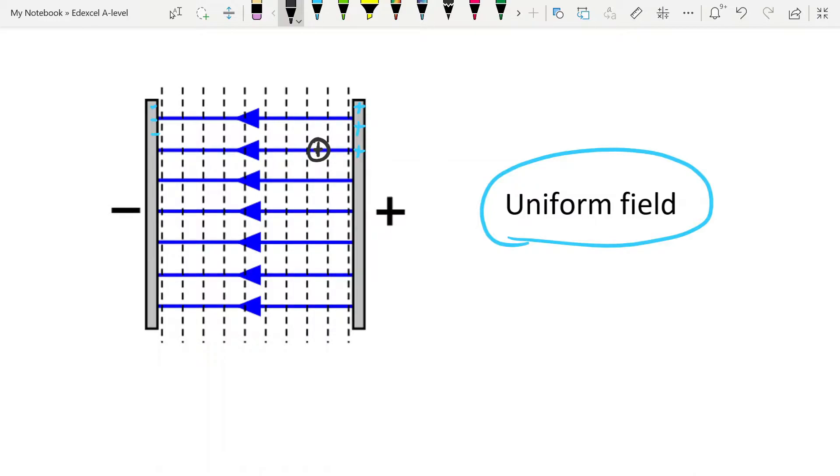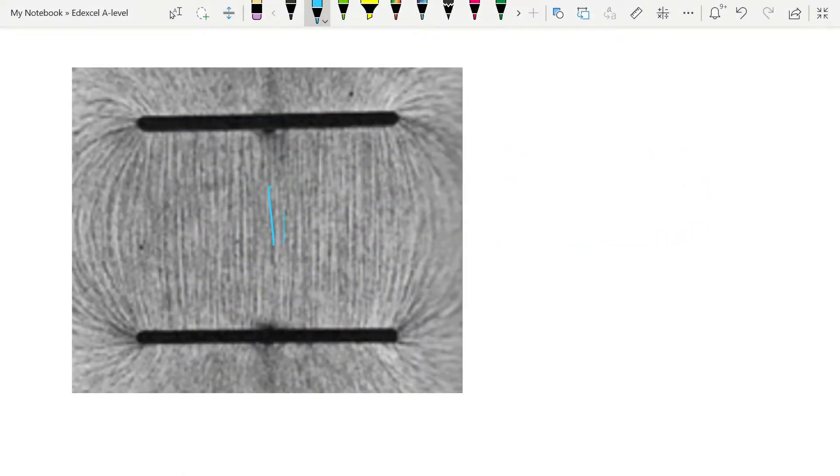You can demonstrate this, as I described in my last video, using a petri dish of oil with semolina sprinkled on top of it and connected into an EHT supply, and you would get something like this. Here we can clearly see the parallel lines of the field between the two plates, but of course, at the edges, those vector sums don't sum up exactly to parallel lines and so you get this curvature around the edges. For the most part, we just ignore that and say exactly between the plates we've got these parallel lines.